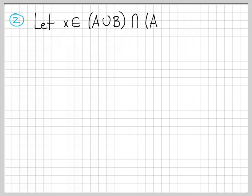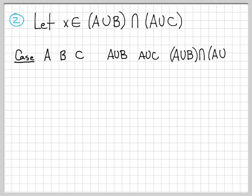Now let's work on the second direction. We need to let X be an arbitrary element of A union B intersect A union C, and our strategy is to show it must end up in A union B intersect C. The way I approached this is a tabulation — thinking about all the different ways X can be in A union B intersect A union C. There are only so many ways this can happen, so if we enumerate all of them and figure out the implications, we can cover all our bases.